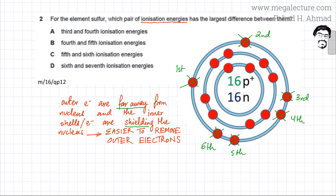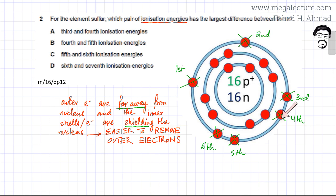The difficulty of removing each electron increases only very slightly, because every time you remove an electron the positive charge on the ion increases. So removing all of the first six electrons would be relatively easy.